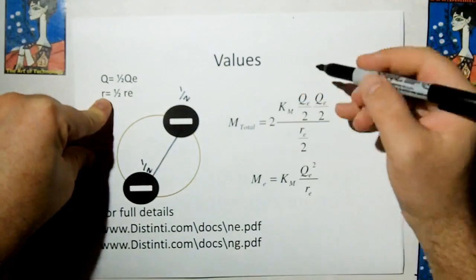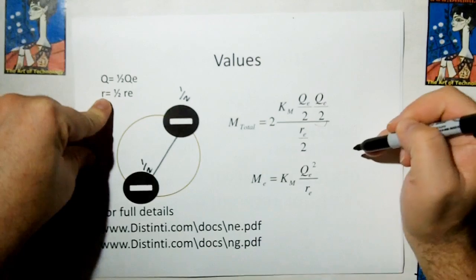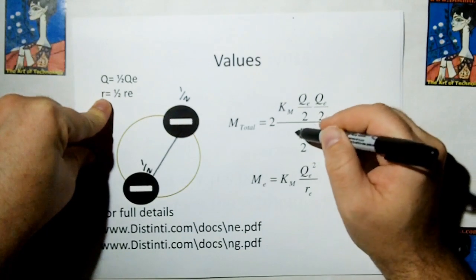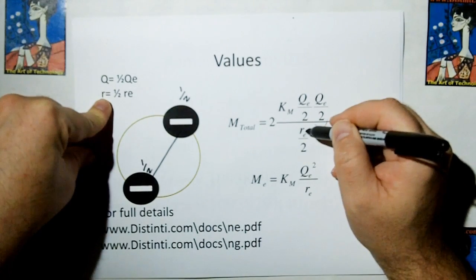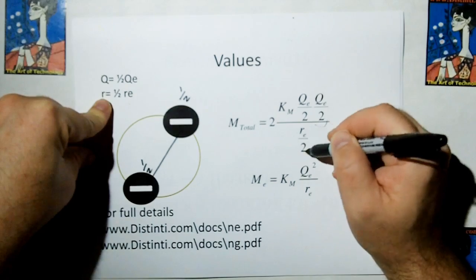So we put those in, we put the charge of an electron over two, and divide by, and substitute the classical electron radius over two.